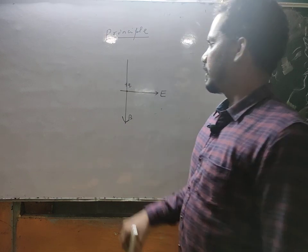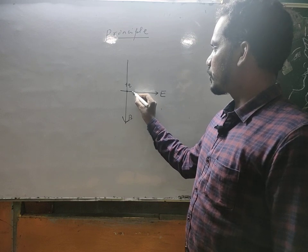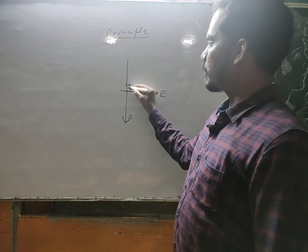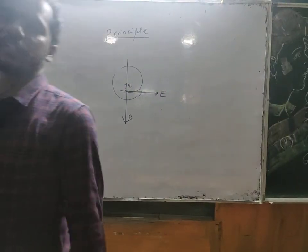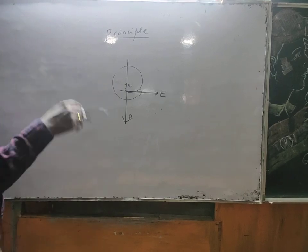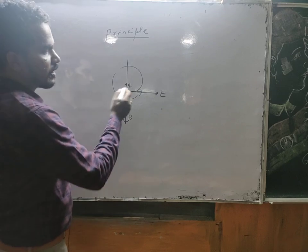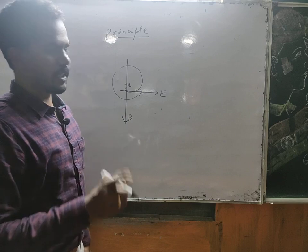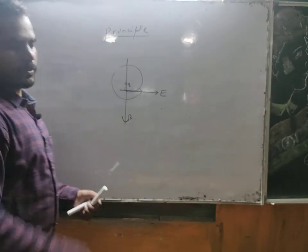Let the charge particle be positive. A freely placed charge in the electric field experiences a force, so it starts moving. Once it is moving, the magnetic force puts it on a circular path and it rotates. The charge particle moving perpendicular to the direction of the magnetic field B follows a circular path. The perpendicular magnetic field throws the particle into a circular orbit.